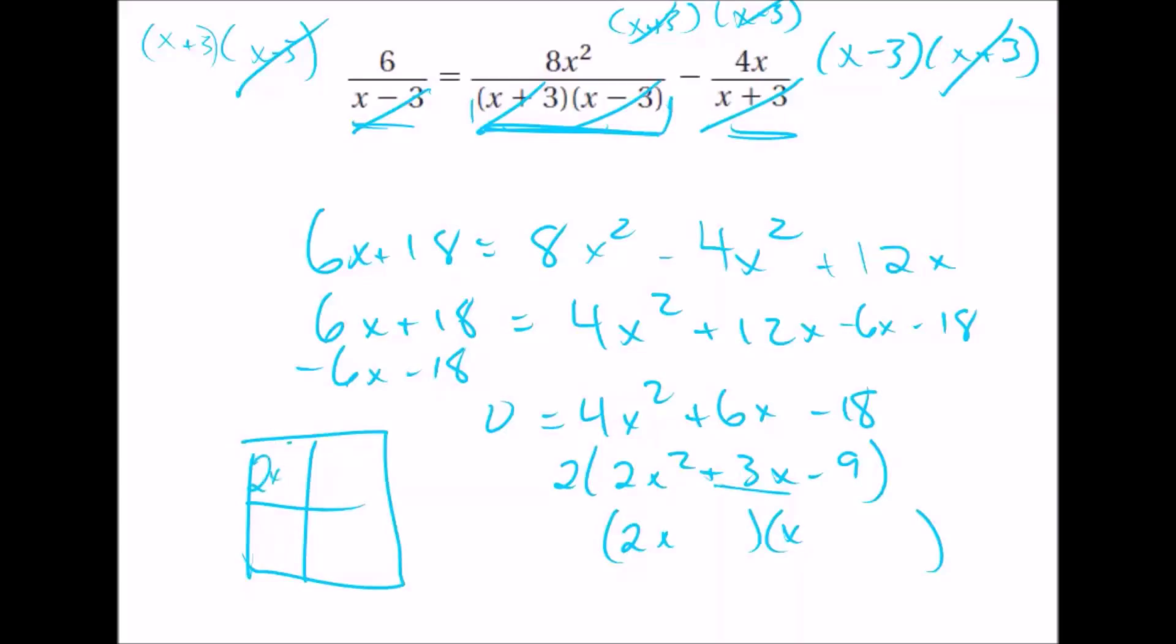We're going to write 2x squared here, minus 9 here. Then we're going to multiply 2x and negative 9 to give negative 18. And we're looking for the factors that give negative 18, but combined to give positive 3. So I think the only thing that's going to work is plus 6 and minus 3. Those two things multiply to give negative 18, but they add together to give plus 3, and those need an x.